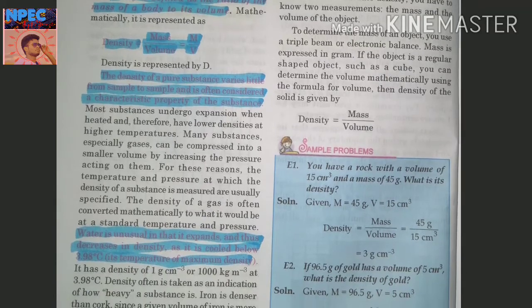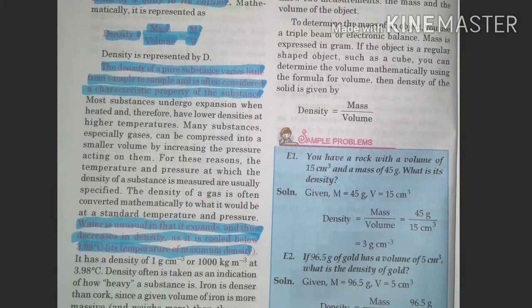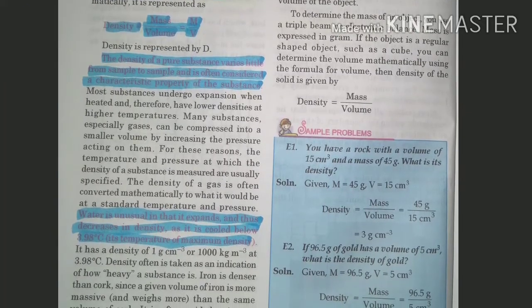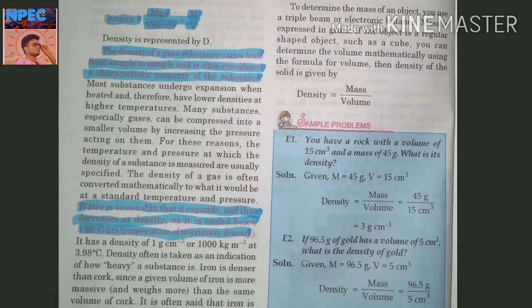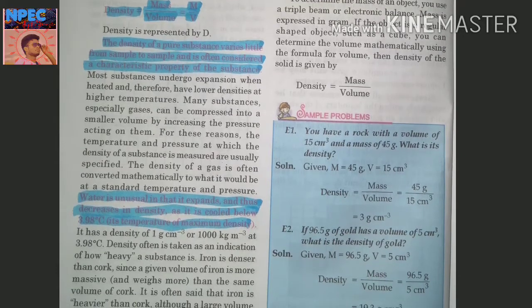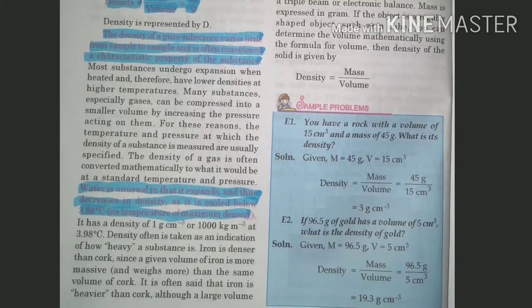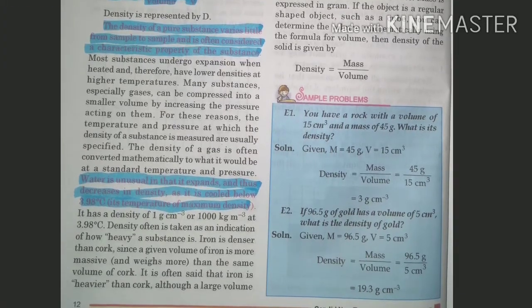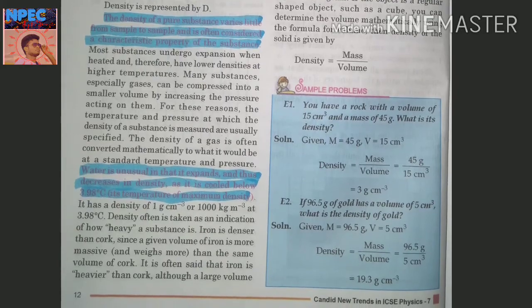Example 1: A rock has a volume of 15 cm³ and a mass of 45 g. Density = mass/volume = 45/15 = 3 g/cm³. Example 2: 96.5 g of gold has a volume of 5 cm³. Density = 96.5/5 = 19.3 g/cm³.